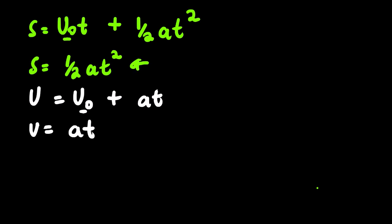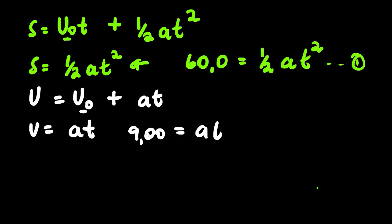Let us substitute these equations with values. We have 60.0 as our distance, then we have half and then we have a t squared. You can simply say this is equation one. Then looking at substituting equation two, we know that we have 9.0 as the final velocity equals to at.